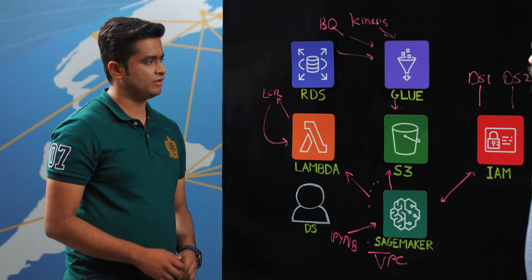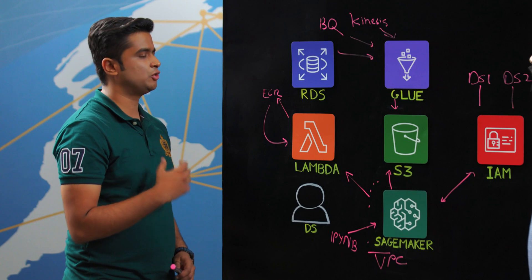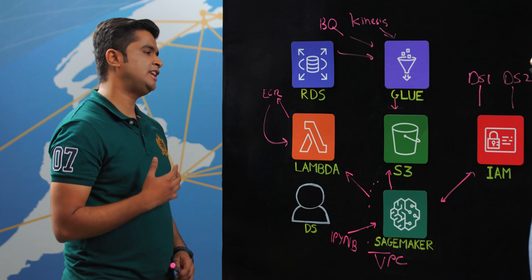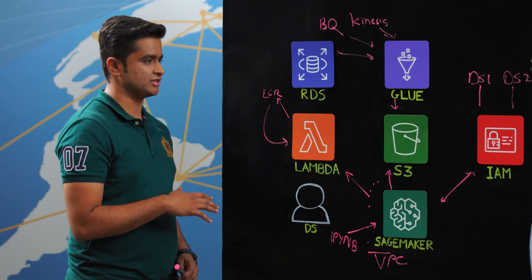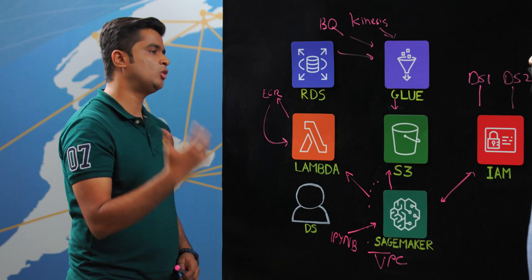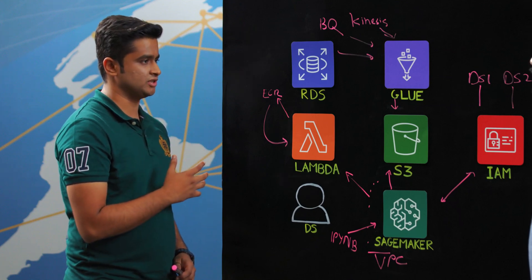The first key challenge was security because prior to this architecture, we only used to have single SageMaker notebook instances. As we kept scaling, multiple data scientists joined us and they logged onto the same notebook instances. There was absolutely no workspace isolation. Moreover, there was resource starvation due to so much traffic on a single notebook instance.